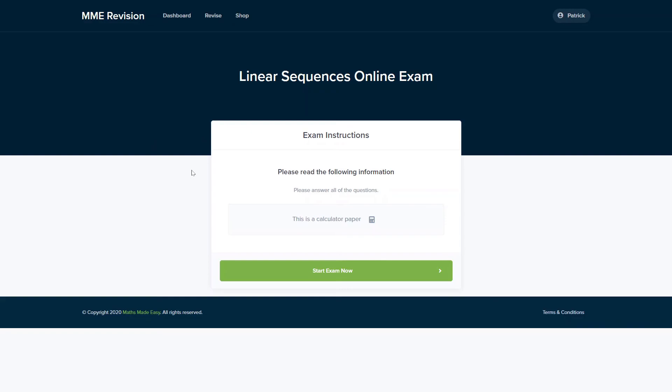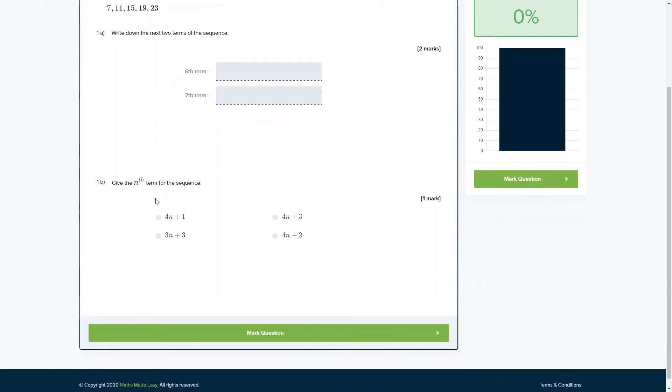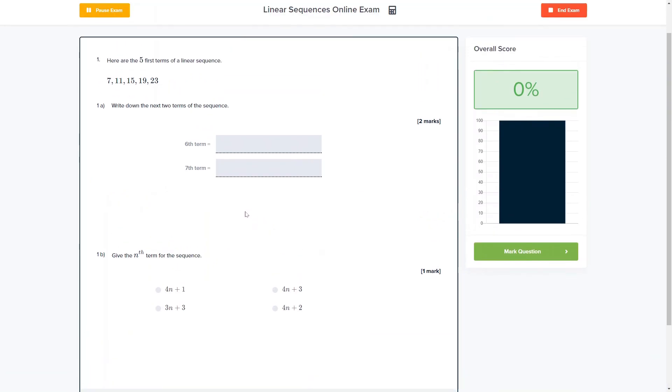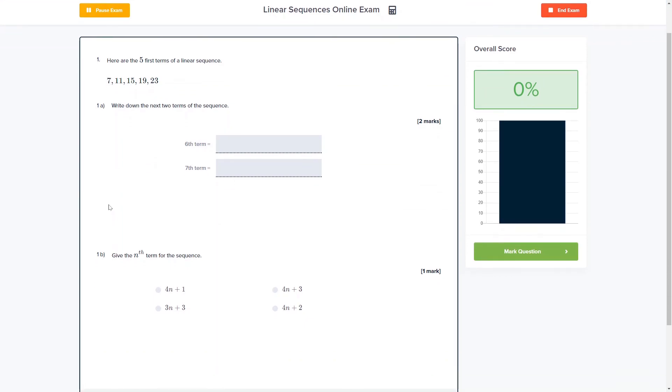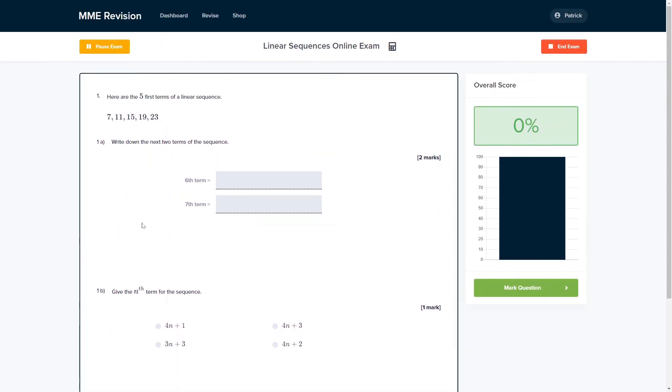If you want to practice some linear sequences exam style questions you can do so with our online exam. This is available through our revision platform. If you take the test you'll find loads of different questions to have a go at, a variety of different question types, and all of which you'll receive instant feedback on. So this is a really good way of keeping track of your progress, finding out where you're going wrong, and a good way to make sure you can improve in time for your actual exam. So if you're interested you can click the link below.